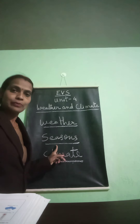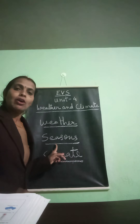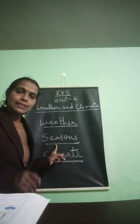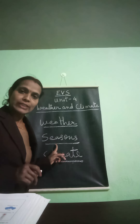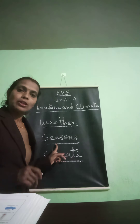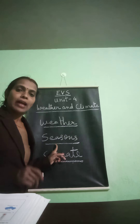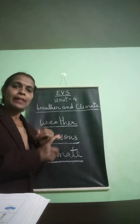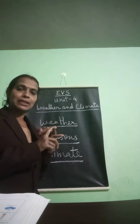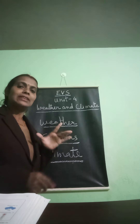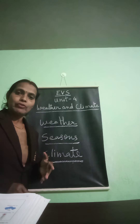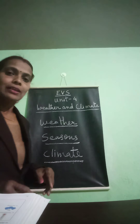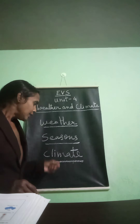Seasons — what are seasons? The division of a year due to changes in the weather is called season. There are four seasons on the earth: Spring, Summer, Autumn, and Winter. And in India, there is also a rainy season.